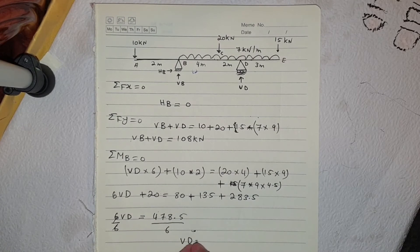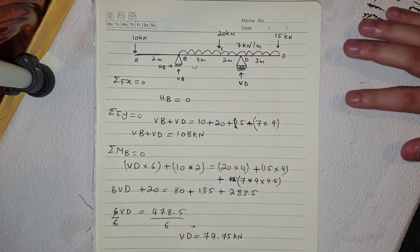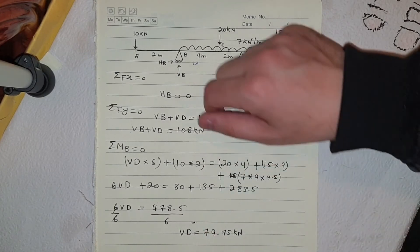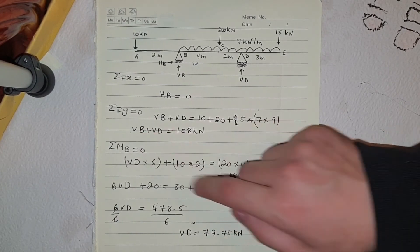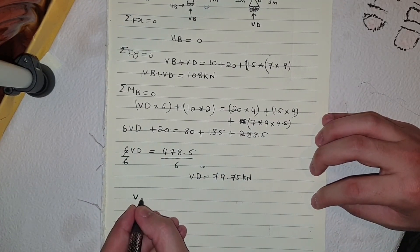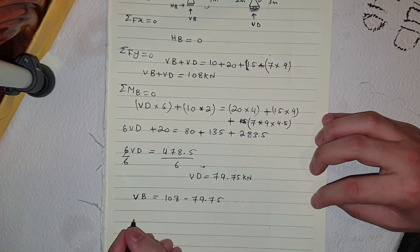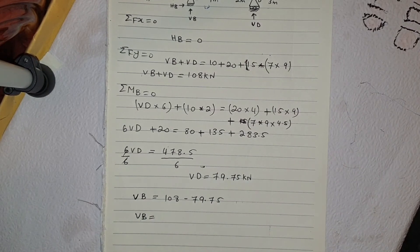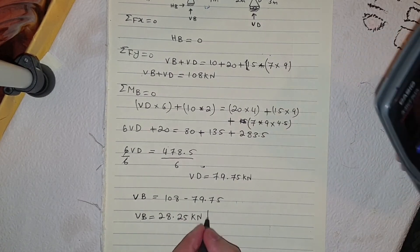Our Vd will be equal to 478.5 divided by 6, which is 79.75 kilonewton. We have found the value of Vd. Since Vb plus Vd equals 108, we substitute Vd to find Vb. So Vb equals 108 minus 79.75, which equals 28.25 kilonewton.